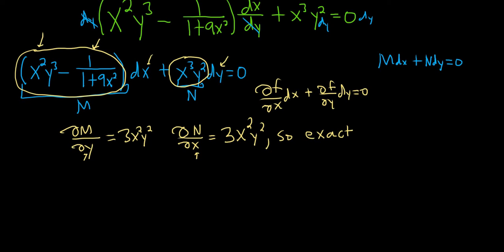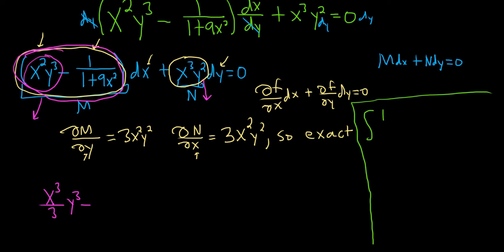So let's do that. When we integrate this first piece with respect to x, we first have to integrate the x² y³. So the y³ is a constant, so we will get x³/3 times y³. And then minus, and now we have to integrate this second piece. So this integral does require a little bit of work. So I'm going to go to the side over here and show you how to do it. It's probably the hardest part of the problem. So we have 1 over 1 plus 9x² dx.